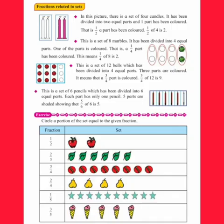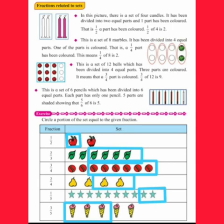Let's learn about fractions related to sets. In this picture, there is a set of 4 candles. It has been divided into 2 equal parts and 1 part has been colored. In the same way, let us circle a portion of the set equal to the given fraction. The first fraction is 1 upon 2. There is a set of 2 apples. It has been divided into 2 equal parts and 1 part has been circled.